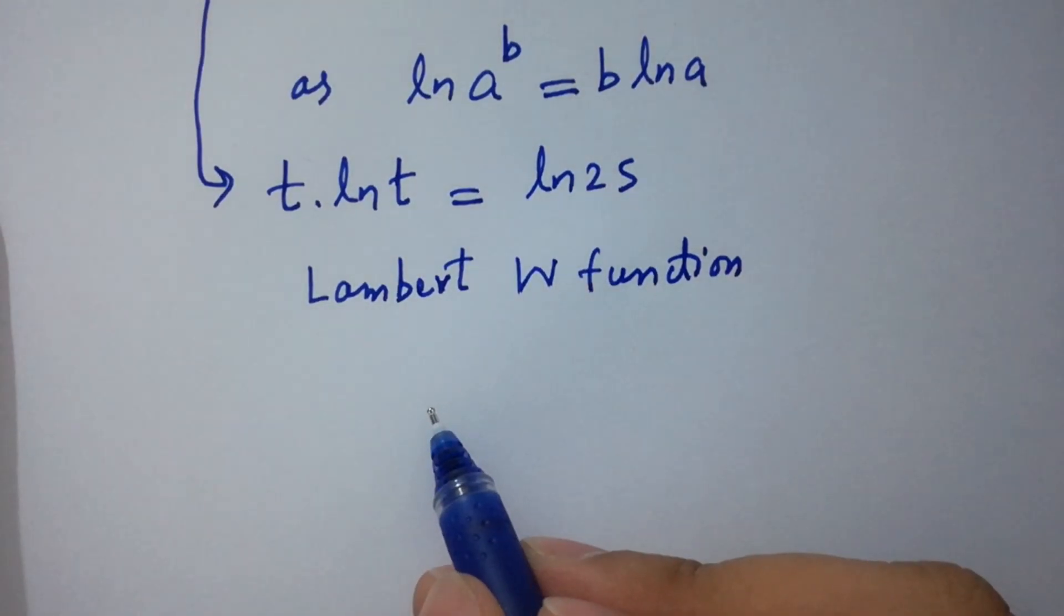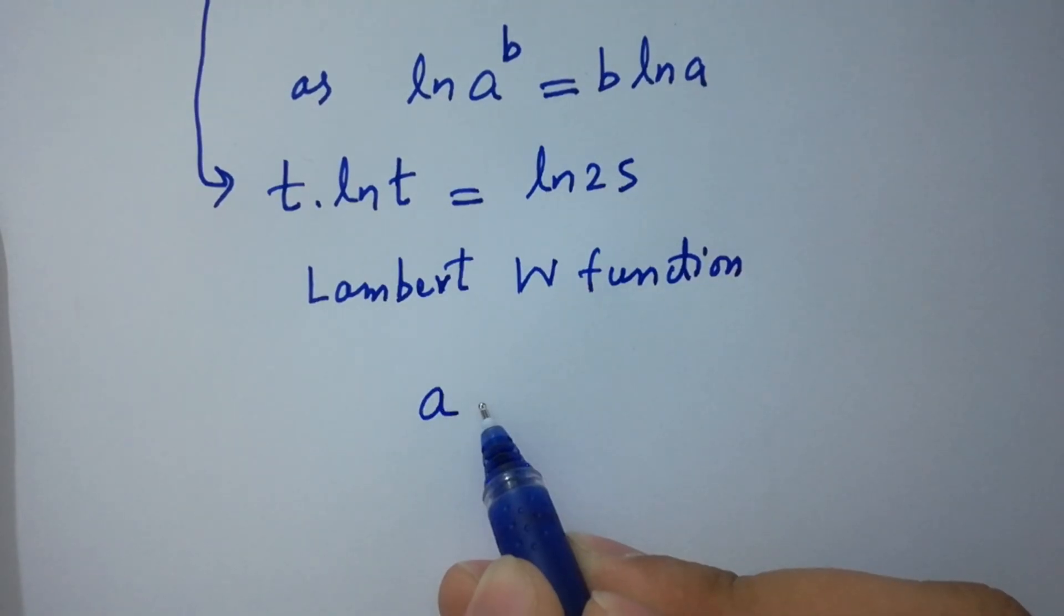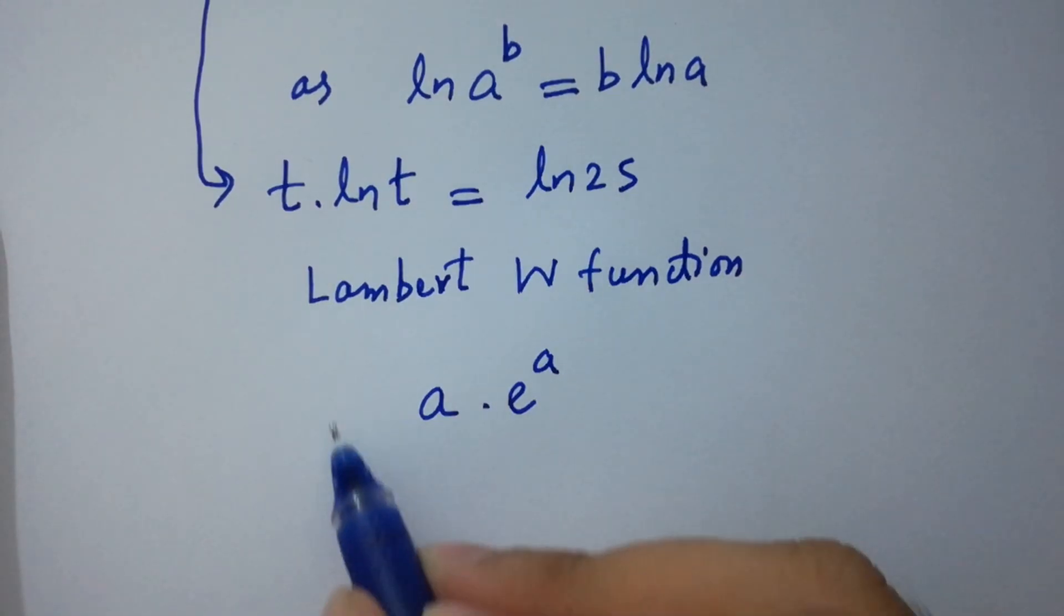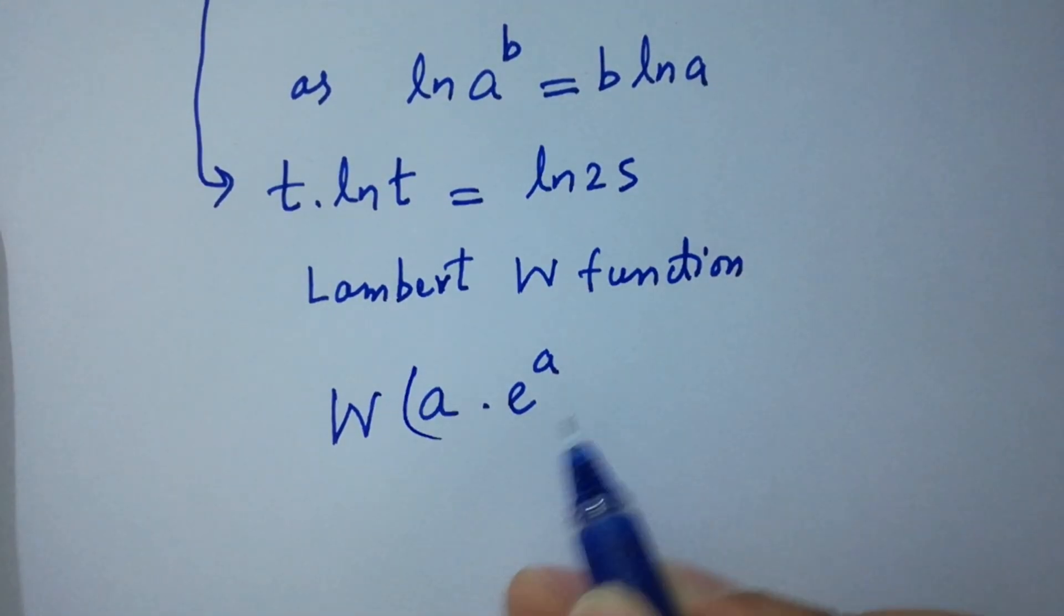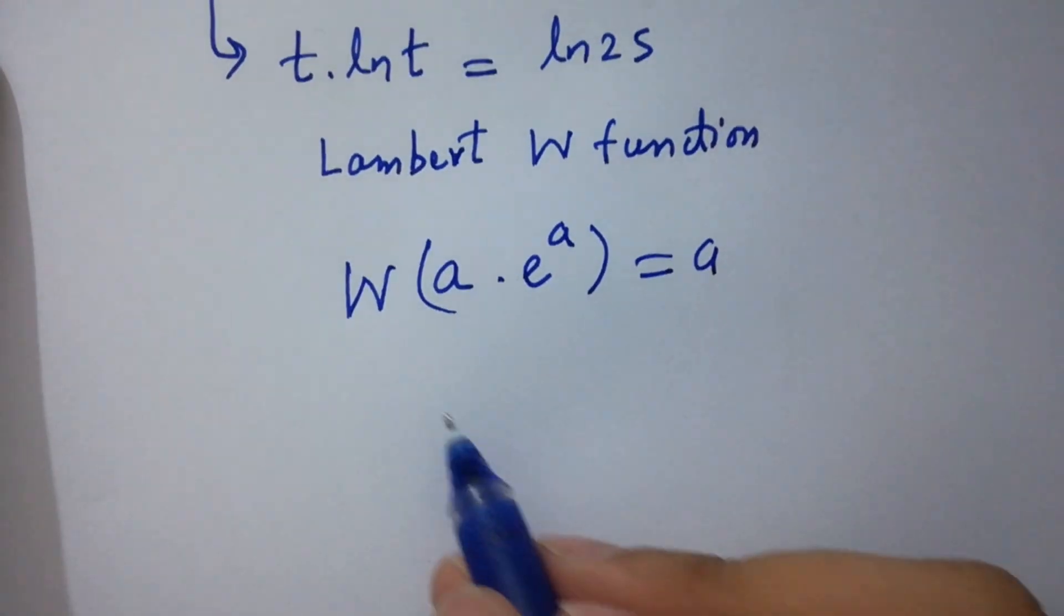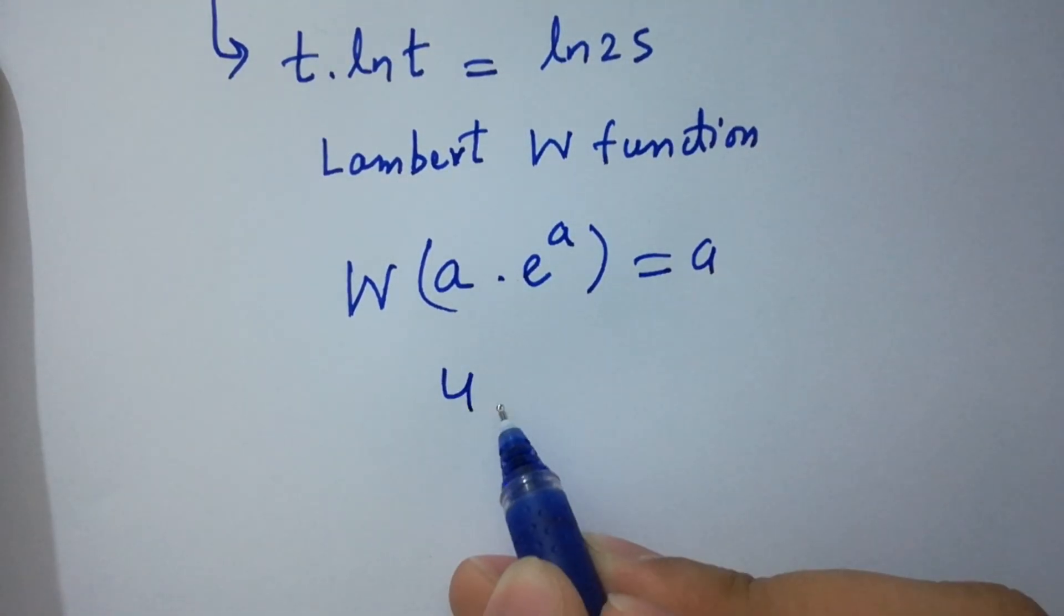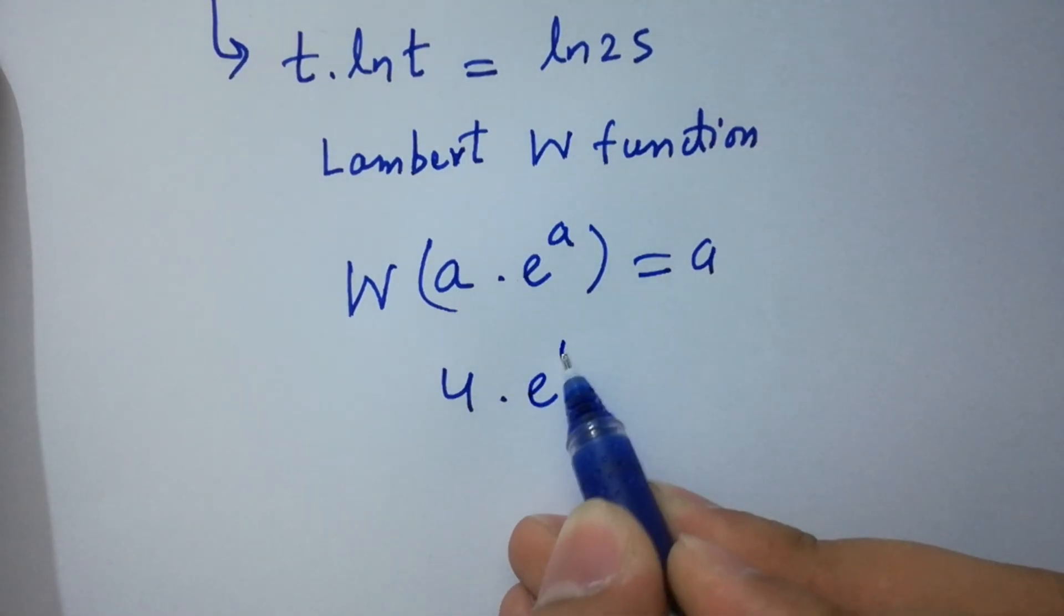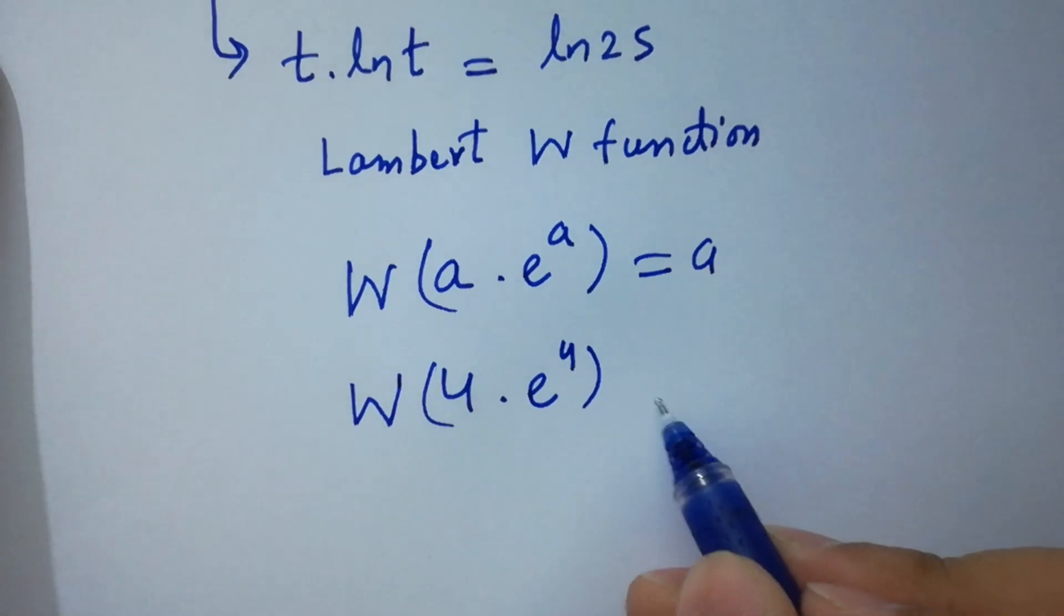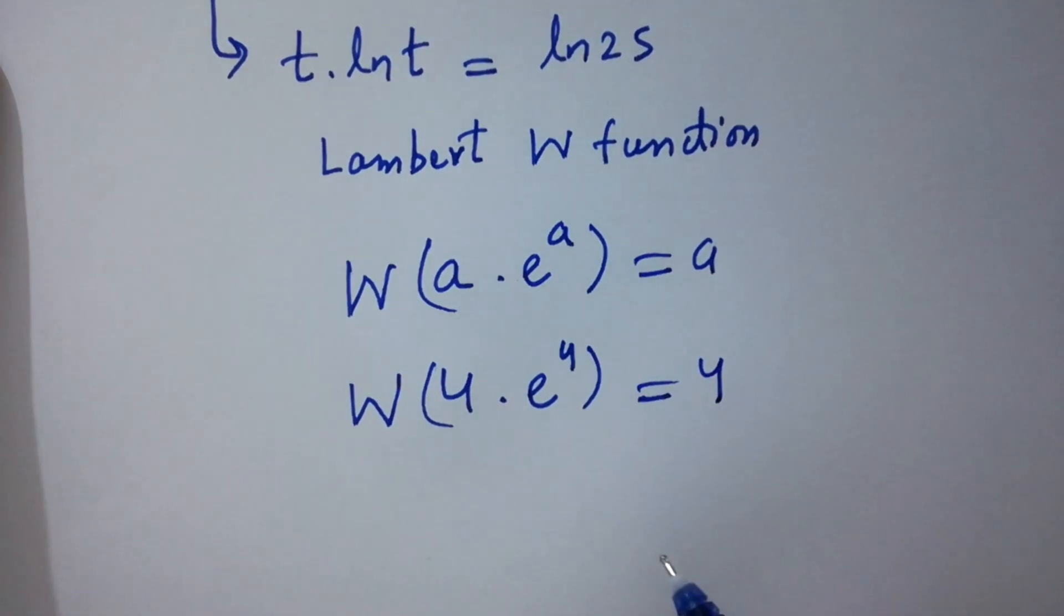If you have an expression a times e to the power a, if you apply here Lambert W function, then it will be equal to a. Like if you have 4 times e to the power 4, apply Lambert W function, it will be equal to 4. I hope you understood.